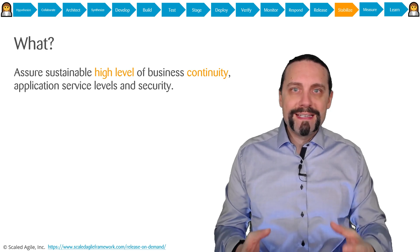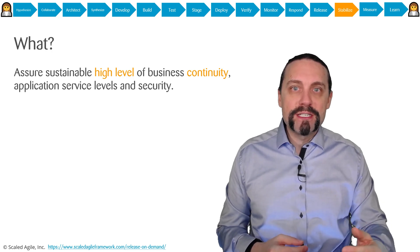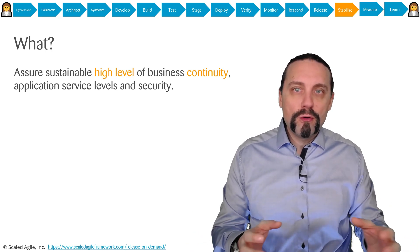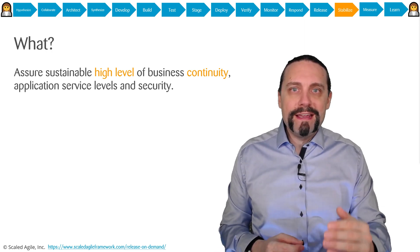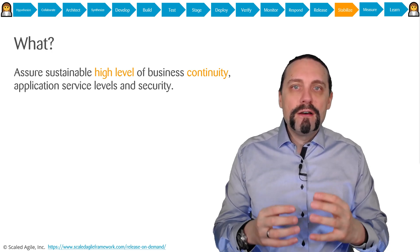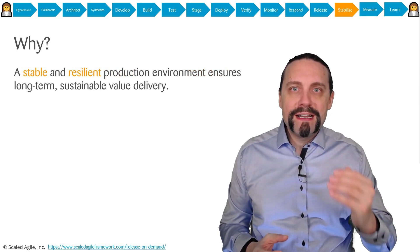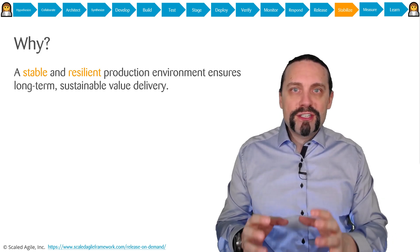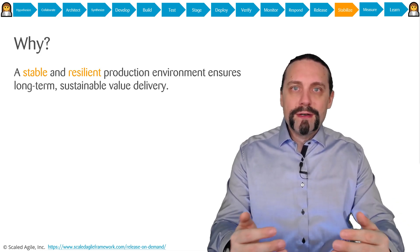The new feature is now in production and the feature toggle has been switched on for a subset of users or all users. Now we need to assure that everything runs smoothly, so we need to have a high level of business continuity. We need to do this because we want to have a stable and resilient production environment which guarantees that we can continuously deliver value to our customers.